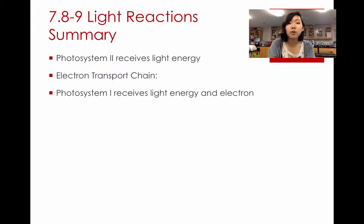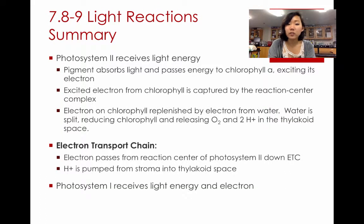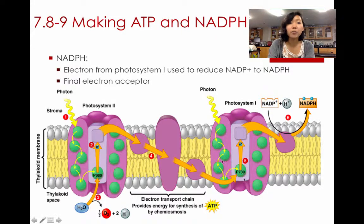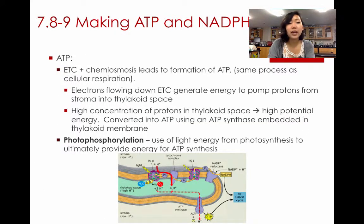These next couple of slides are just a verbal summary of what we just discussed. This covers how photosystem II receives the light energy. Next is the electron transport chain, where the electron is moving from photosystem II to photosystem I. And then finally, photosystem I receives that electron and continues to eventually form NADPH. NADP+ is the final electron acceptor to form NADPH. In terms of ATP, it's the same exact process in concept as what we saw in oxidative phosphorylation — using a proton gradient generated by electron flow and eventually forming ATP.